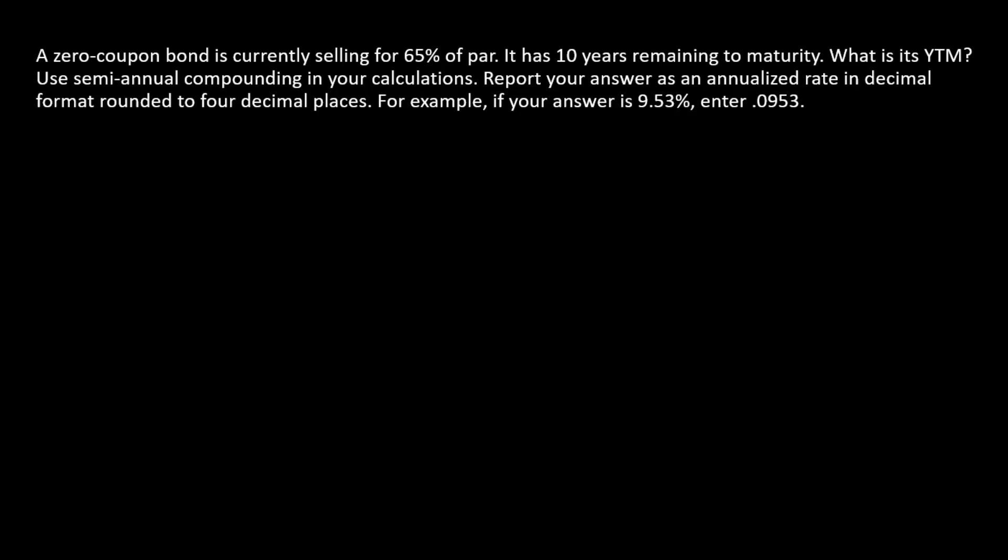We're going to calculate the yield to maturity for a zero coupon bond. The information given is in terms of a percentage of par value, so the shortcut way is to set par equal to $100 and let all the other numbers flow through that.